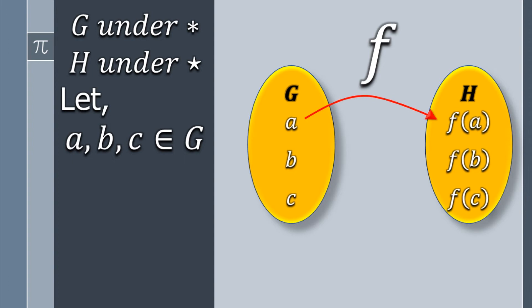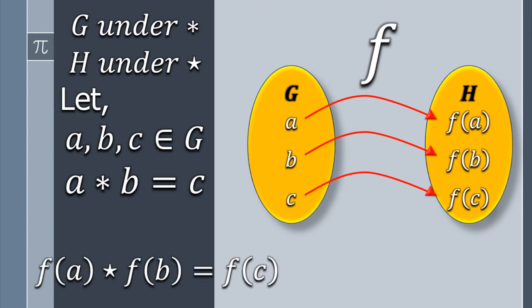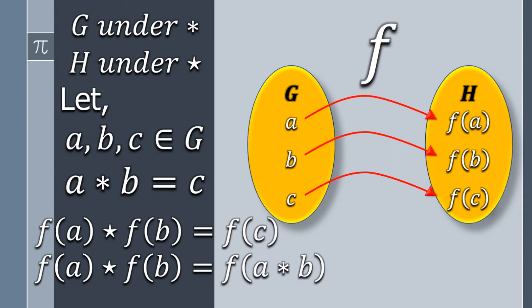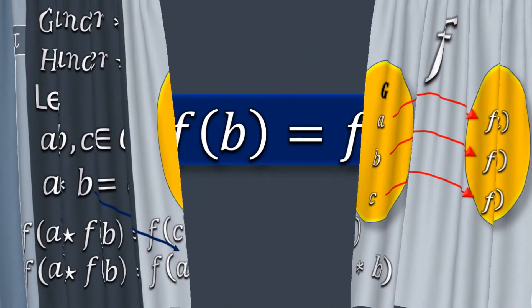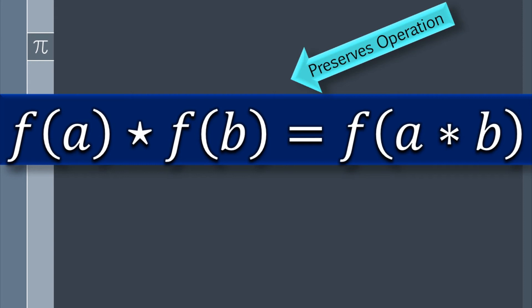So a is mapped to F(a), b to F(b), and c to F(c). Now if a ★ b = c, and F(a) ⊛ F(b) = F(c), then by substituting the value of c we have F(a) ⊛ F(b) = F(a ★ b), which is exactly the definition of homomorphism — that it preserves the group operation.